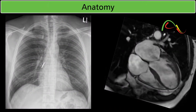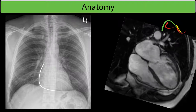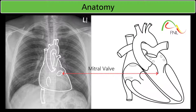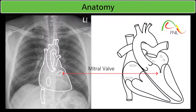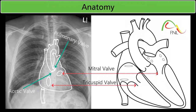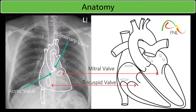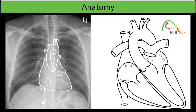The mitral valve is one of the four valves of the heart, located between the left atrium and the left ventricle. It is also known as the bicuspid valve, or the left atrioventricular valve. As the word bicuspid indicates, the mitral valve has two cusps or two leaflets — the anterior leaflet and the posterior leaflet — which sit within the mitral annulus. The mitral annulus is the junctional zone separating the left atrium and left ventricle, serving as an insertion site for the leaflets. The annulus is oval in shape, and the mitral valve is the only valve with two leaflets.